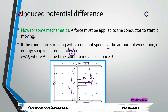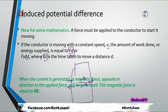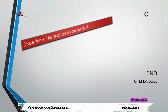We can calculate the distance using d = v × Δt, where v is the velocity and Δt is the time taken. For example, if you travel at 100 miles per hour for two hours, you cover 200 miles. When a current is generated, a magnetic force opposing the direction of the applied force is also generated. This magnetic force is given by F = BIl sinθ, which we have already discussed. The discussion will be continued in the coming episode. Take care, Allah peace.